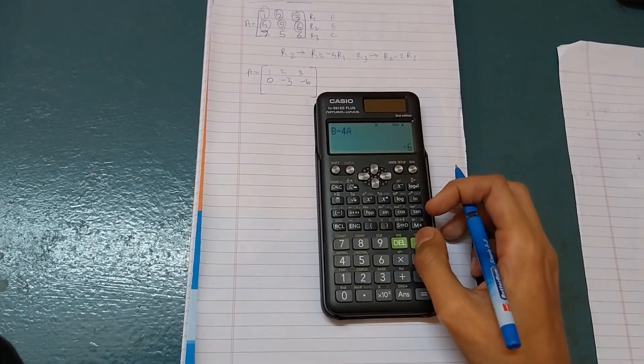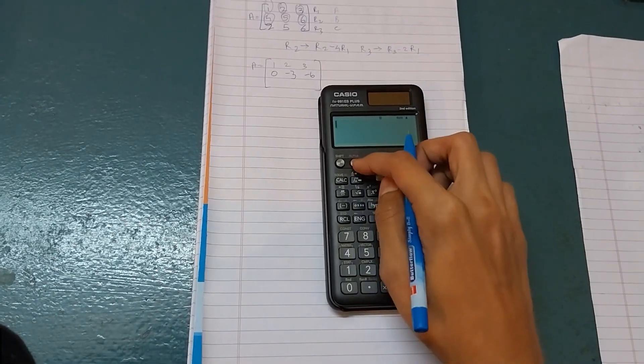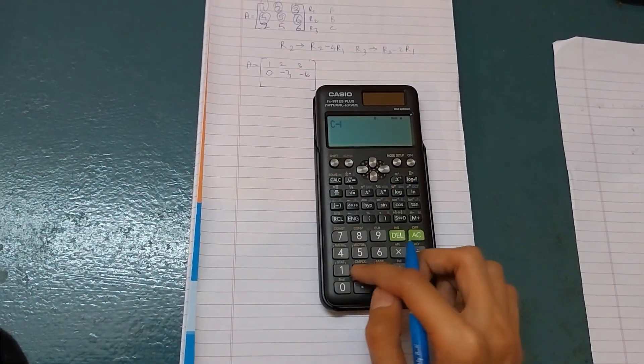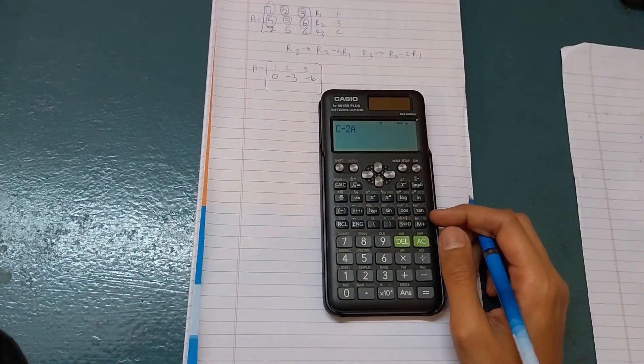Now let us change the equation. Press AC. Then write this equation: alpha C minus 2 times alpha A. This is the equation.